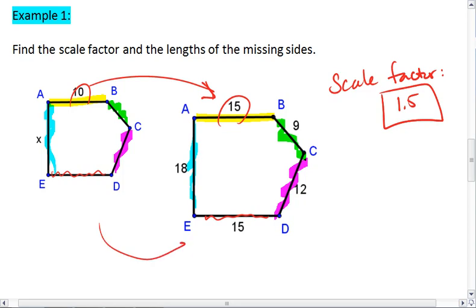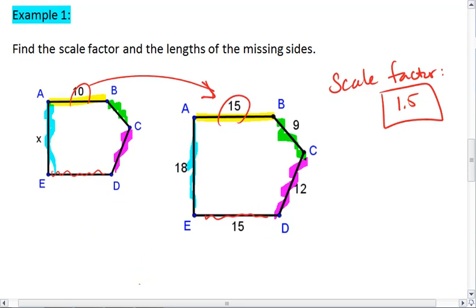This means to go from the smaller figure to the bigger, we want to multiply by 1.5. And then to go backwards, to go from the bigger figure to the smaller, we want to divide by 1.5. We have all the numbers for the bigger figure, so let's go back to the smaller.